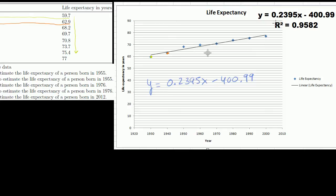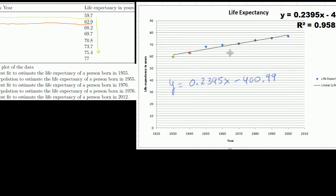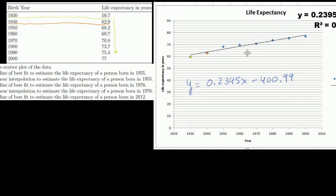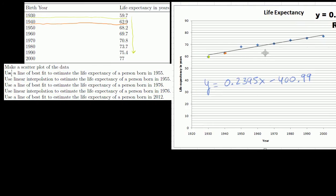I'm not going to go into what r squared is just yet, but it's a measure of how good this line is actually fitting. So let's use that. Let's use our line of best fit to answer the rest of their questions. So the second question is, use the line of best fit to estimate the life expectancy of a person born in 1955.